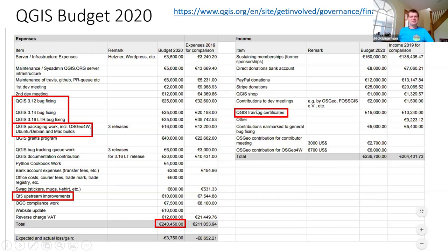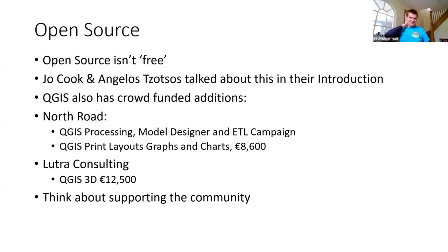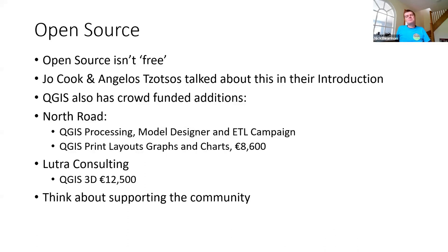They want to take in 15,000 euros from the training certificate, so using these certificates is one of my ways of supporting QGIS. Open source isn't free — we've had some discussions about this already. QGIS does get quite a lot of support, which is great. They also have crowdfunded additions: North Road has done a couple of quite high-profile campaigns for adding extra features, both for QGIS processing — a model designer equivalent of ArcGIS Model Builder — but also in the print layouts and graphs area. They've added the Plotly library to the print layout, which is amazing and really adds to what you can do. Lutra has also done quite a lot of work in the 3D support, so there are lots of ways of supporting open source.